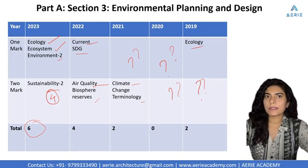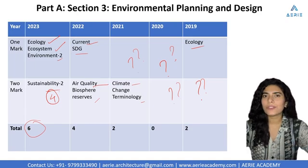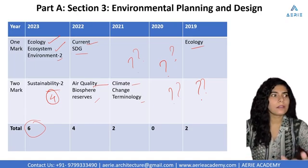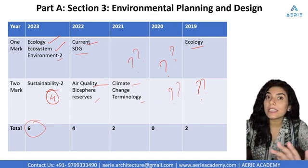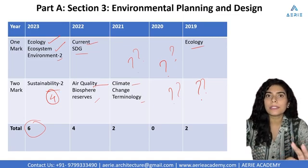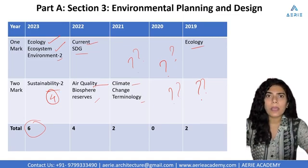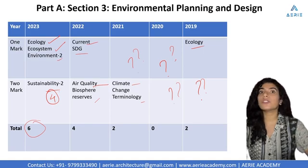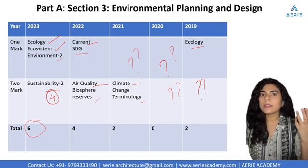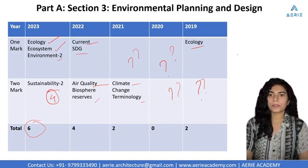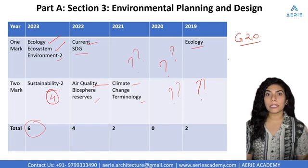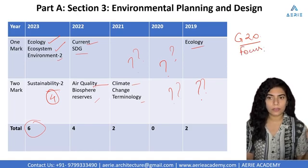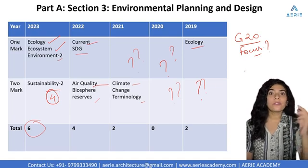Understand this — environment, ecology, climate change, sustainability — all these topics are currently everywhere. Everyone is dealing with climate change and finding solutions to deal with it. So climate change is important, environment is at most priority right now. G20 is a very important topic for this particular section. You need to know basic points related to G20: what was the focus of G20, what was it for, why it happened, and where it happened.